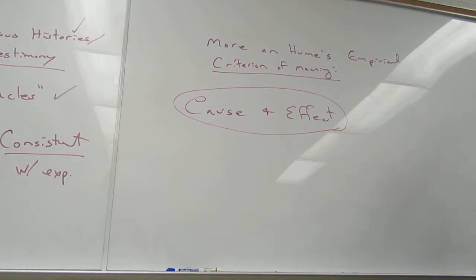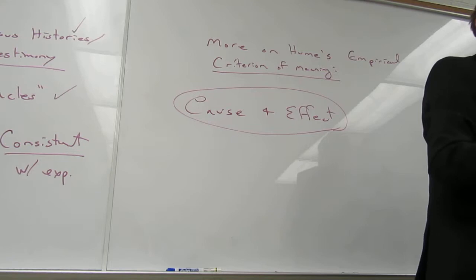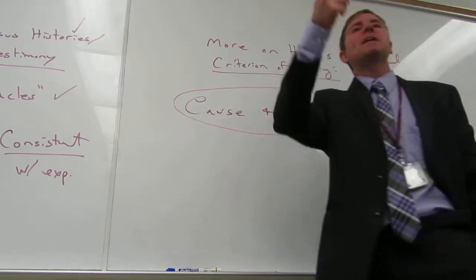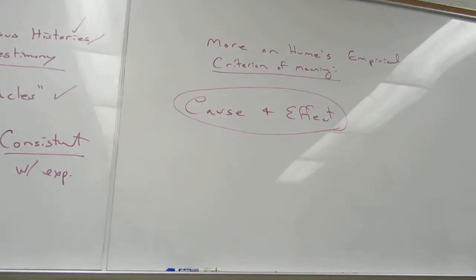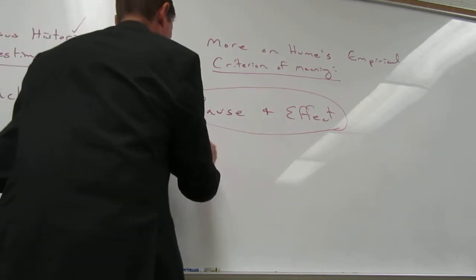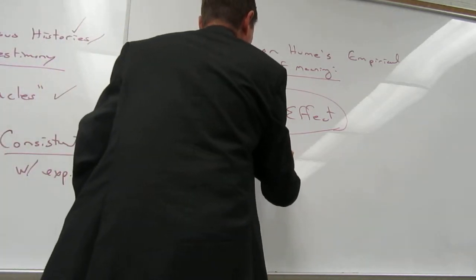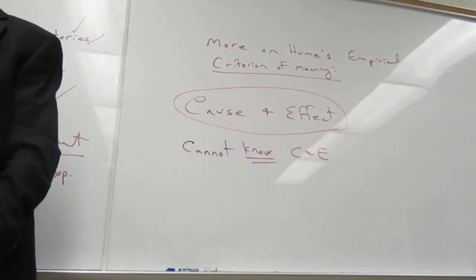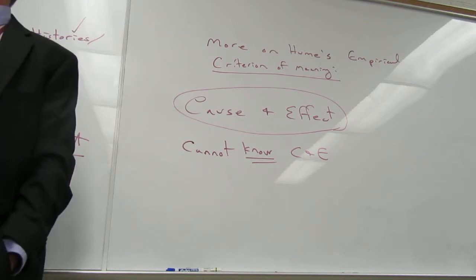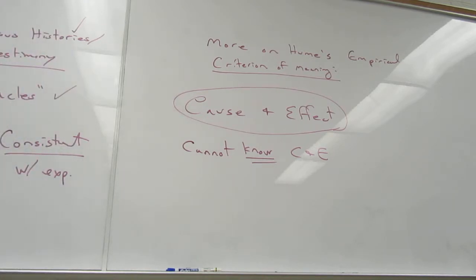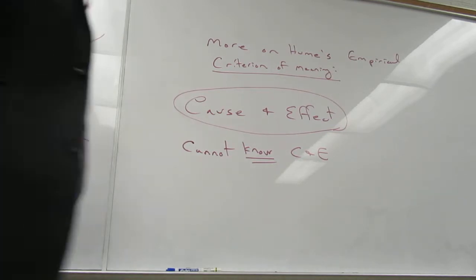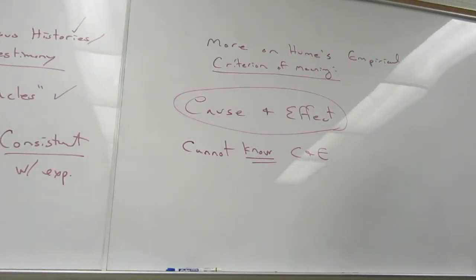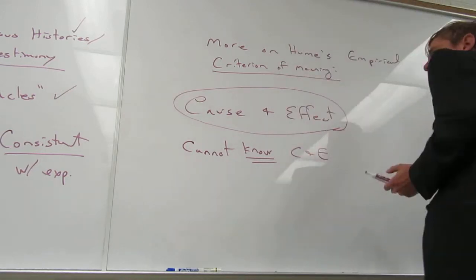Now, most of us take the quote-unquote laws of cause and effect for granted. And this is partly because we tell ourselves that we see them take place on a daily basis. Take a guess what Hume will say. He will make the claim that no matter what we believe we can know, we cannot actually know this thing that we call the cause and effect relationship. Now, his analysis is, again, both simple and elegant. But I'll have to lay it out for you.